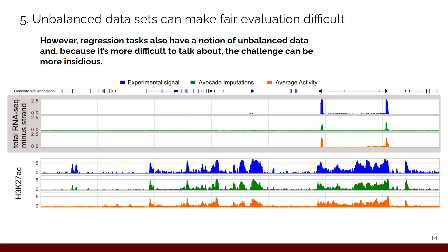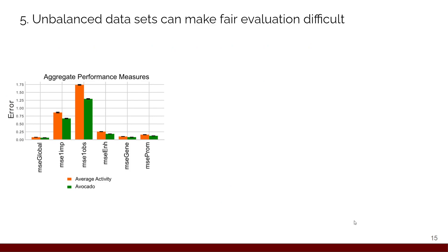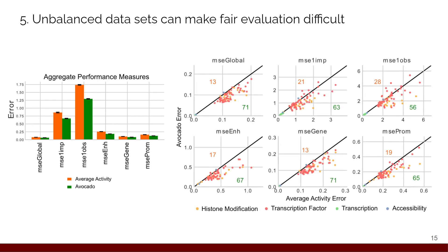And then when you evaluate it, it looks like here that avocado is doing much better than the average activity when you aggregate over all the tracks. But if you break this down by assay, what you can see is that avocado is doing much better on most of the—such a small portion of the total error that it doesn't really matter if avocado is doing better or not. Avocado could be doing so much worse here than the baseline methods, and we wouldn't care if we just looked at the total error.